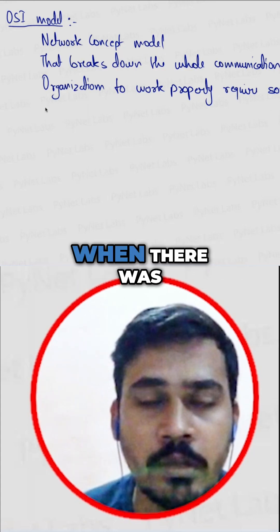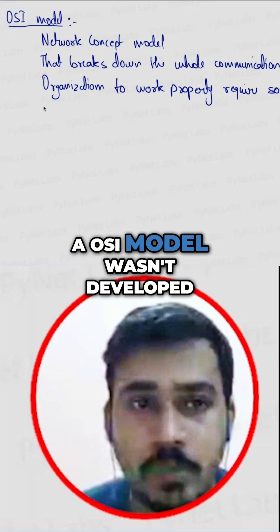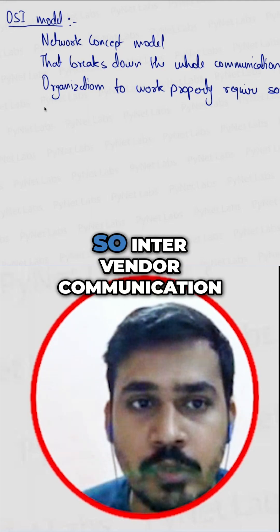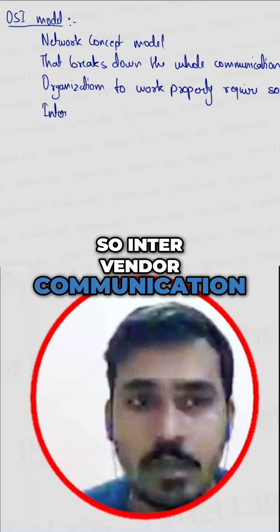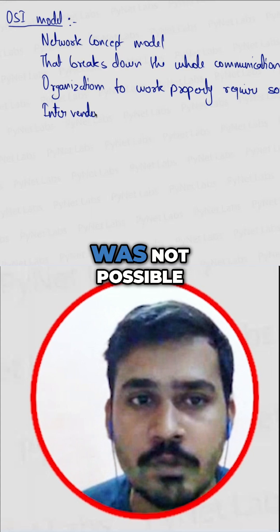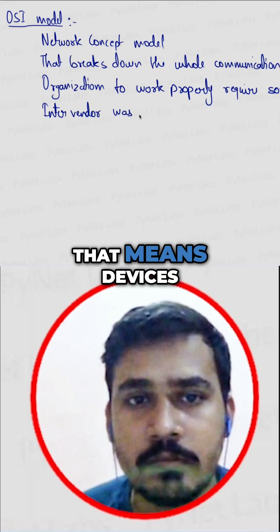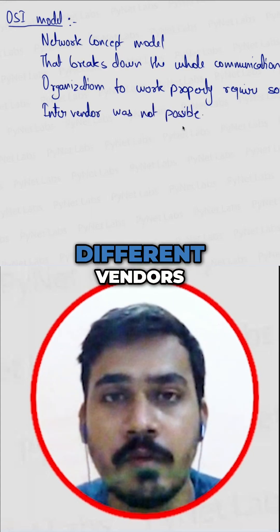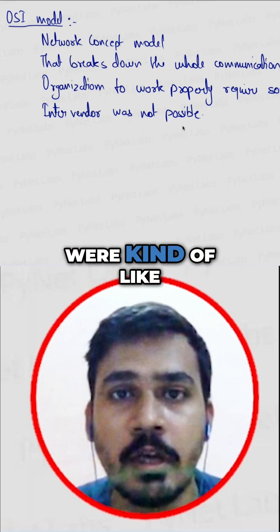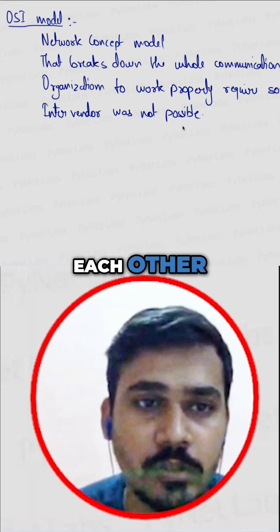Earlier, when the OSI model wasn't developed, inter-vendor communication was not possible. That means devices from different vendors were unable to communicate with each other.